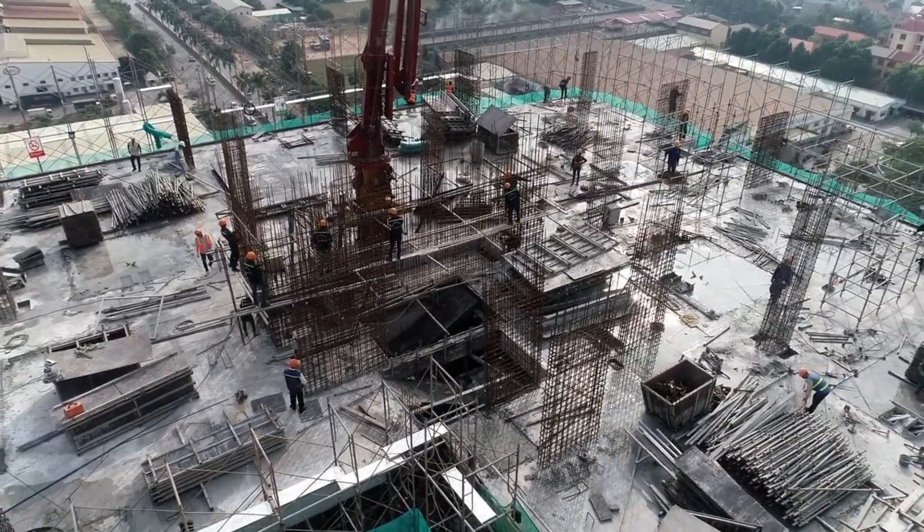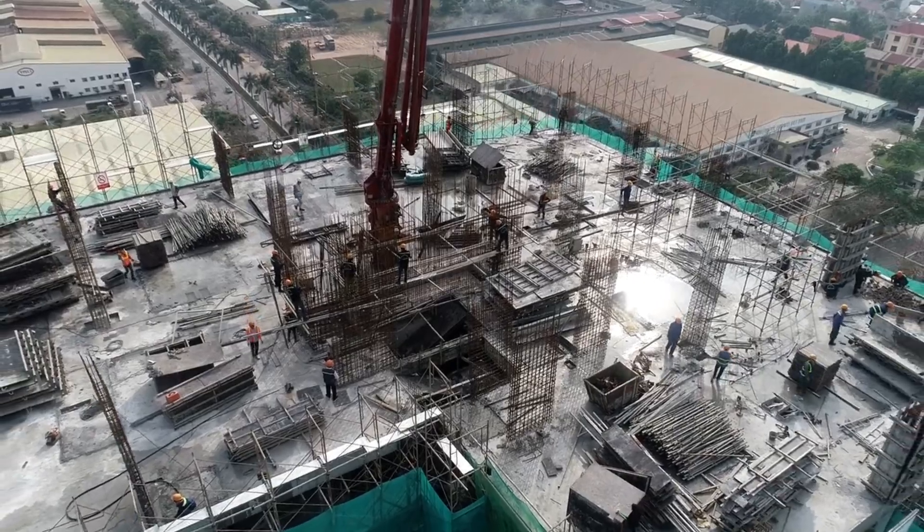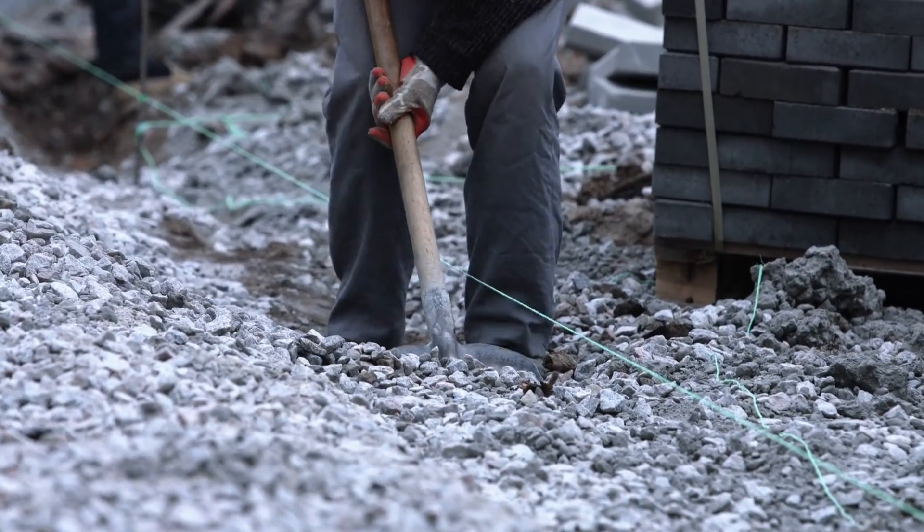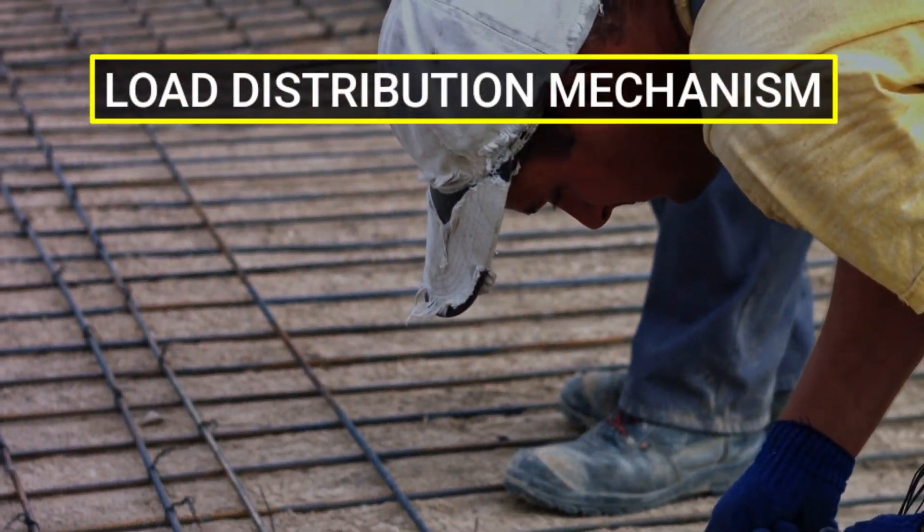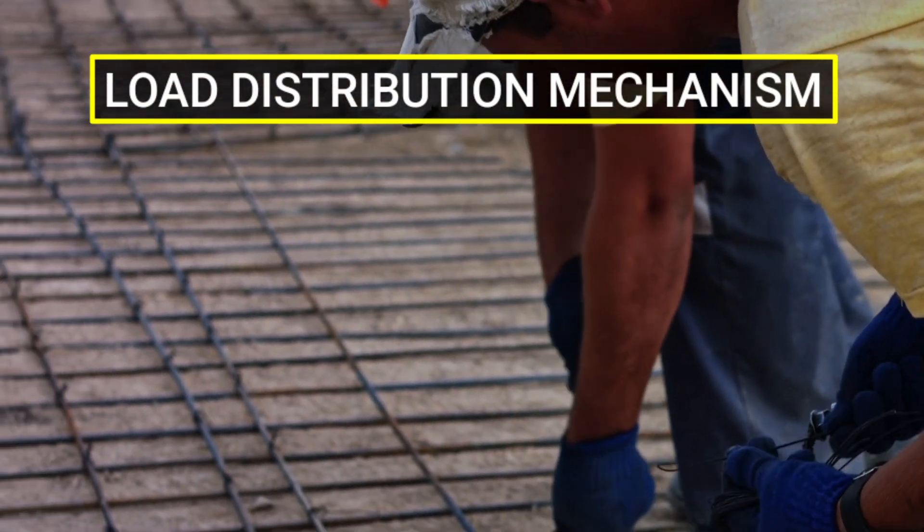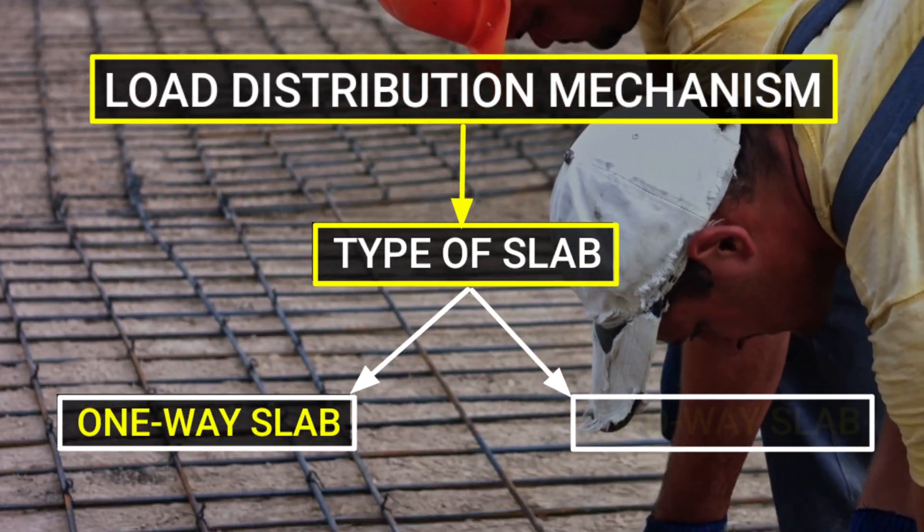An RCC slab is a common structural element of modern buildings consisting of a flat horizontal surface made with a combination of concrete and steel. In this lecture, I am going to discuss the load distribution mechanism of a slab, which depends on the type of slab, whether it's a one-way slab or a two-way slab.